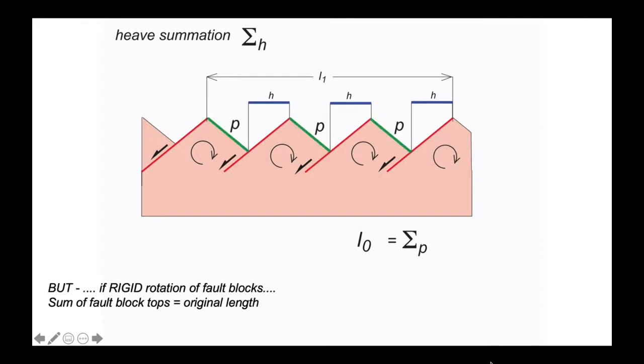But actually, if these fault blocks were rigid, the original length of the crust that's been stretched is simply the sum of the tops of the fault blocks, here labeled p. This is the correct measurement.